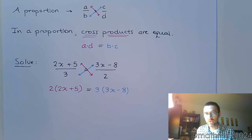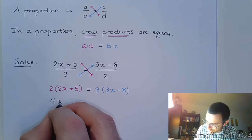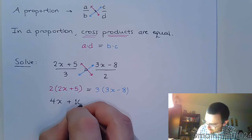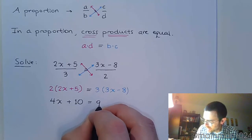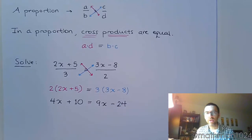And from here, we don't have a fraction, so we just have to multiply things out and see what kind of equation we have. So, distribute, we get 4x plus 10. On the right side, we get 9x minus 24.